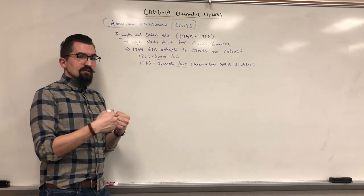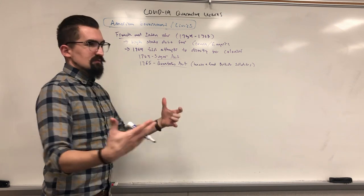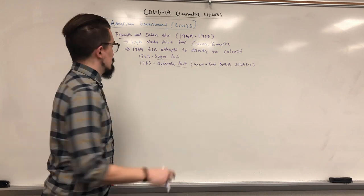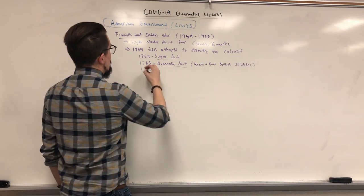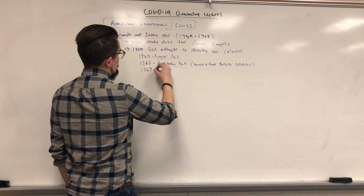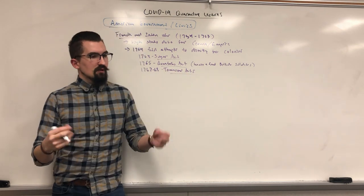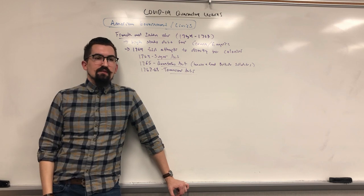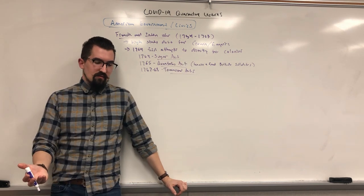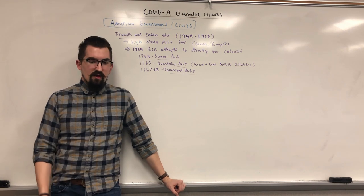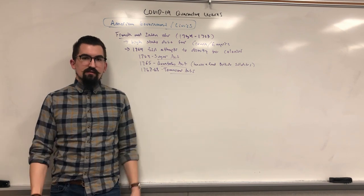Tensions got worse. The British extended taxation attempts through the Townshend Acts around 1767-1768, trying to collect revenues on multiple commodities. Colonists responded by harassing officials, evading taxes, buying from smugglers — whether Dutch or Spanish — or boycotting the taxed commodities altogether.